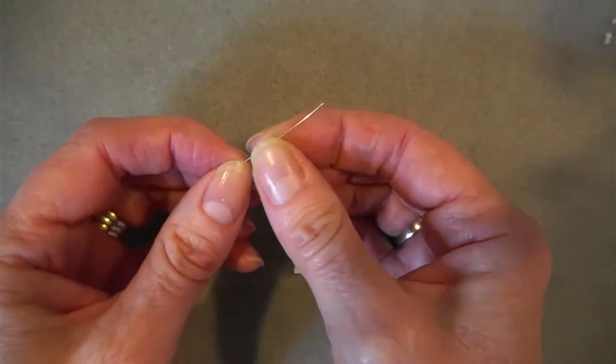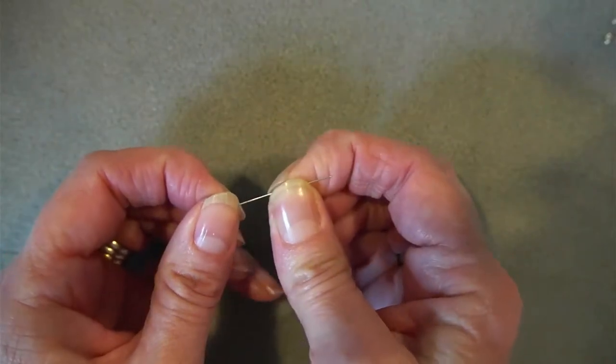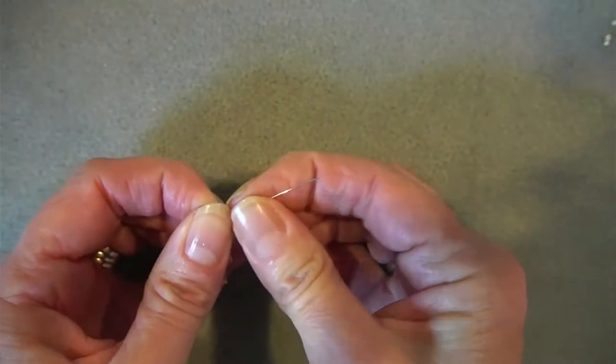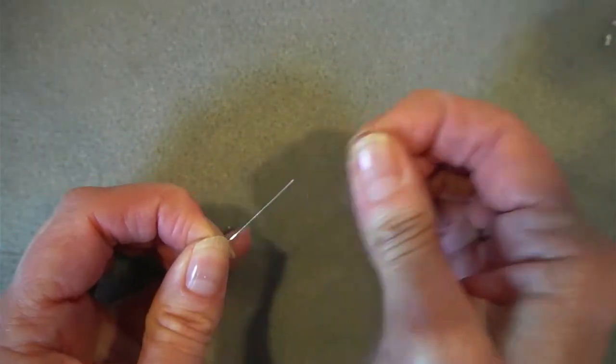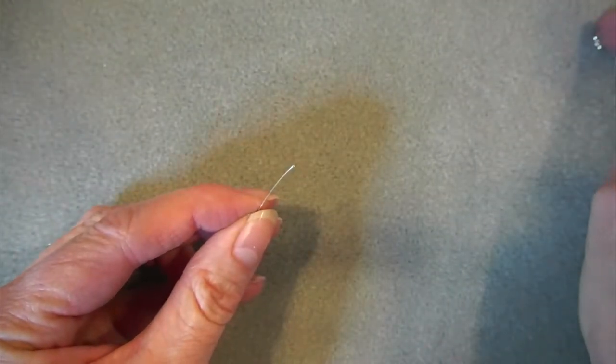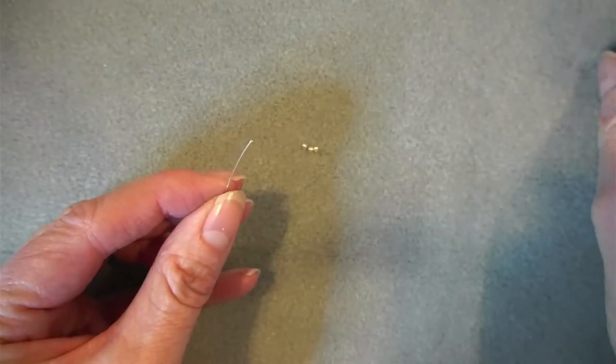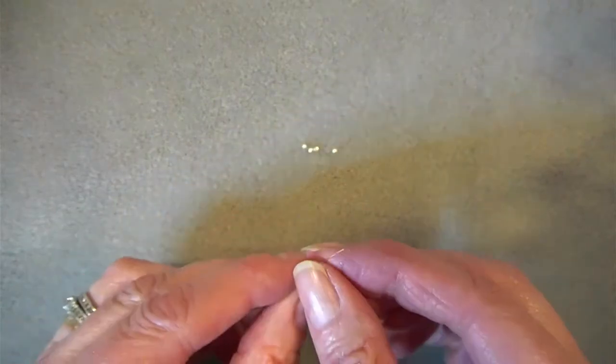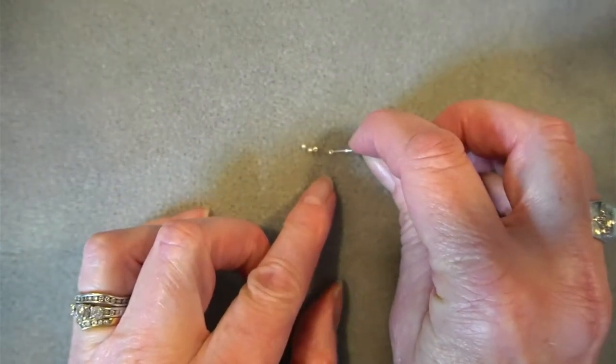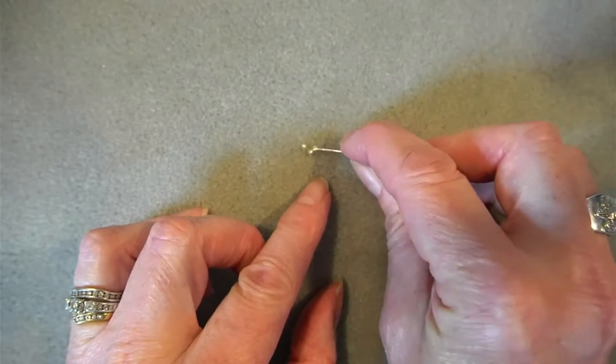Let's make these earrings. We're going to start by making the tail. I've got my ball pin here, just going to give it a bit of a pull to straighten it out, and I'm going to take four of my tiny 2 millimeter silver beads and thread them onto this ball pin.